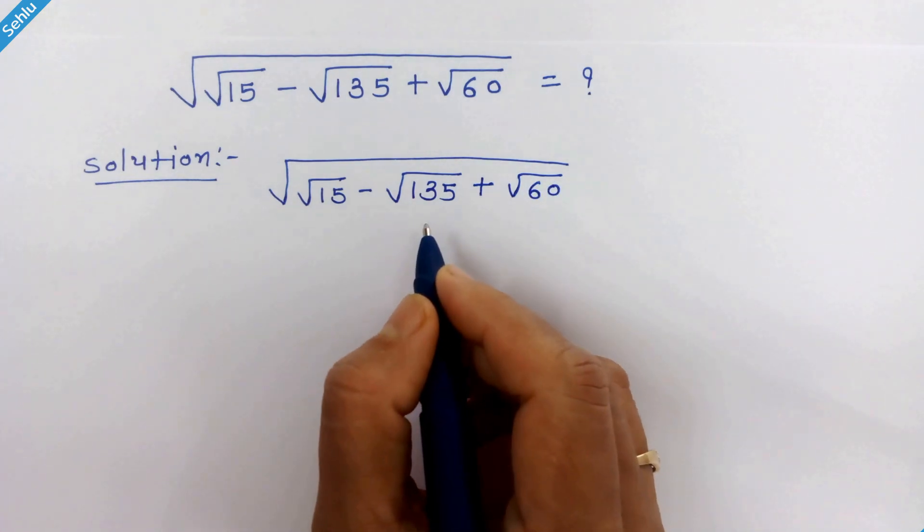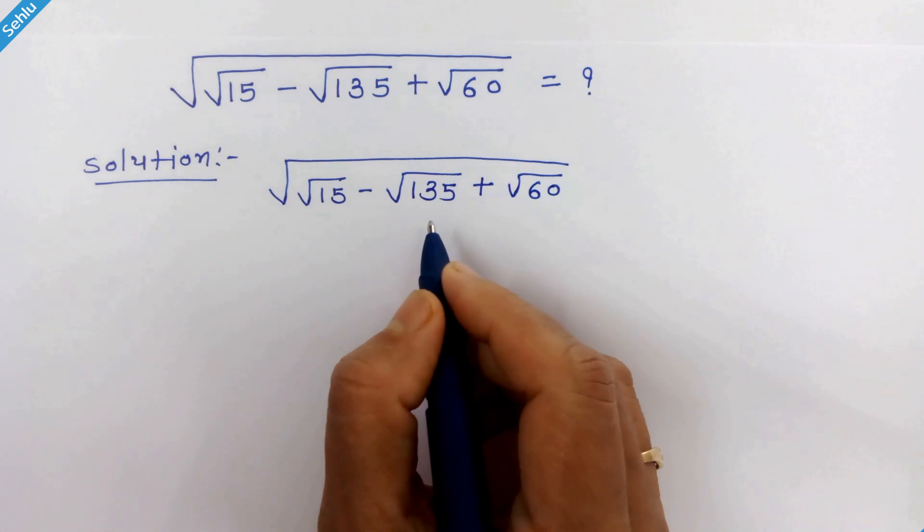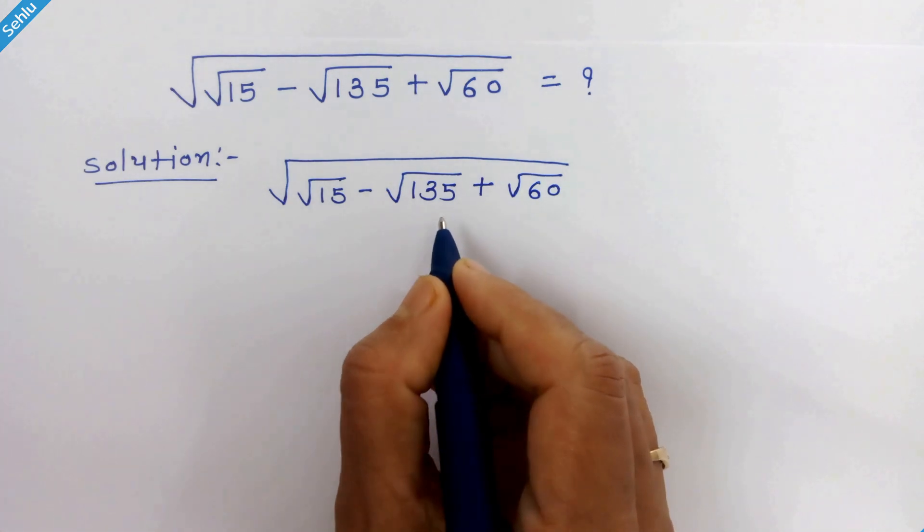Now watch all these three numbers. None of these are perfect squares, but they are factors of 15.